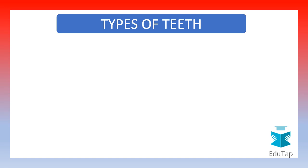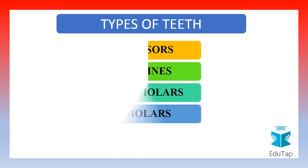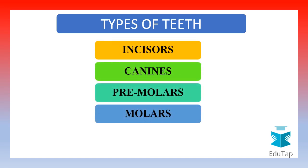Now let us look at the different types of teeth. The different types of teeth are incisors, canines, premolars, and molars.